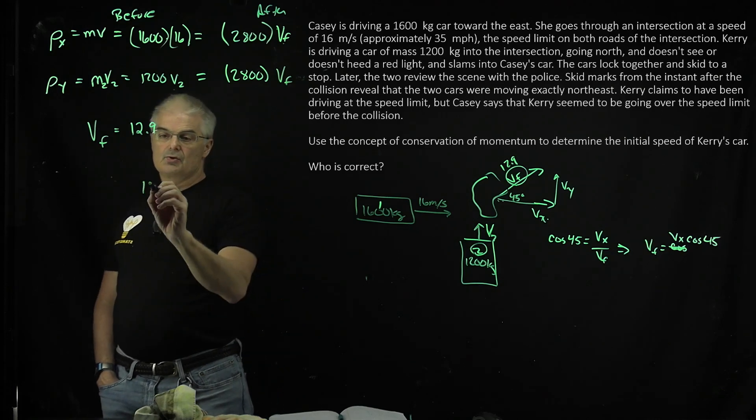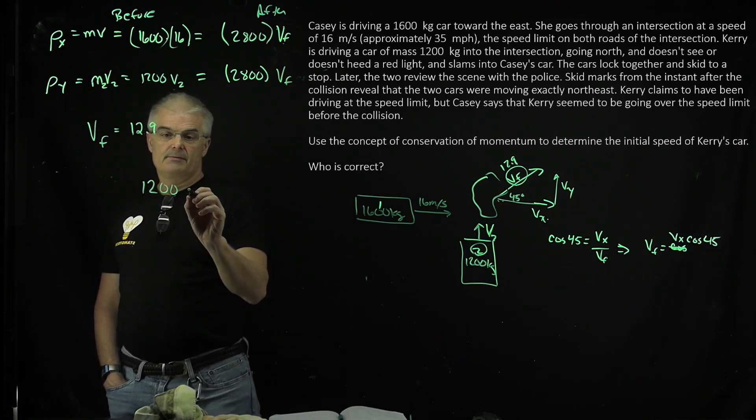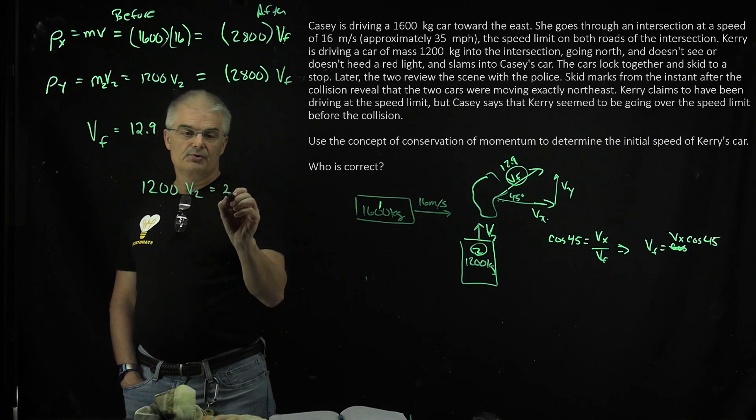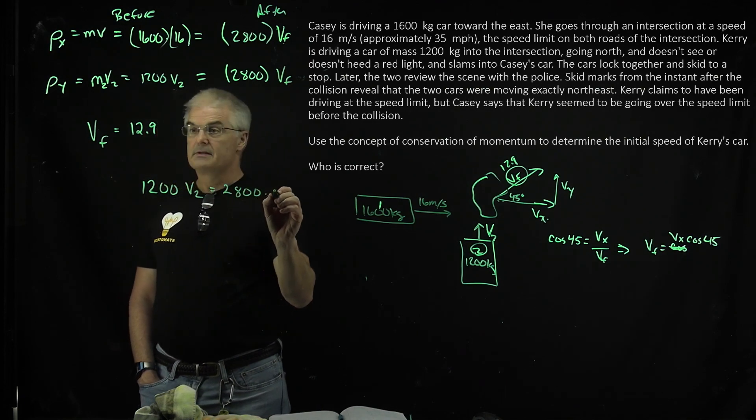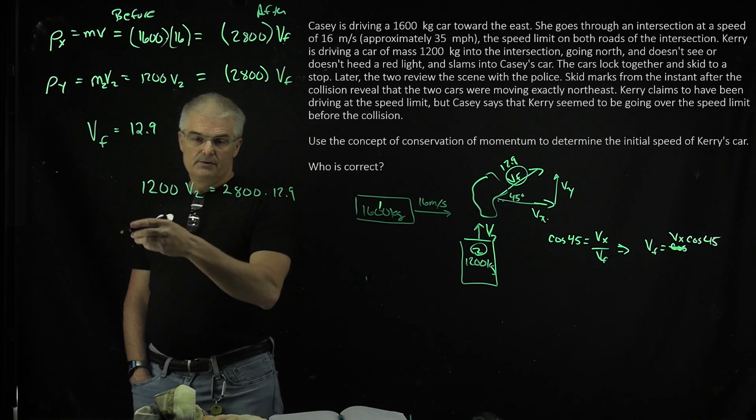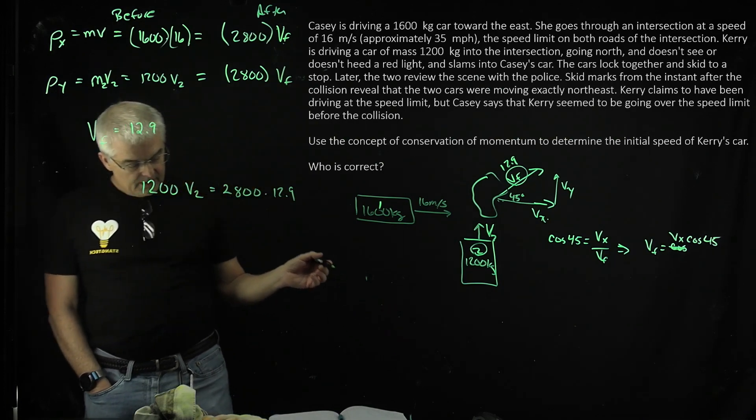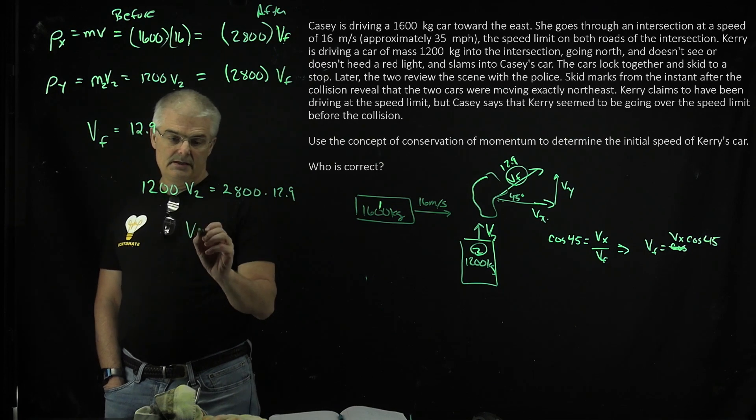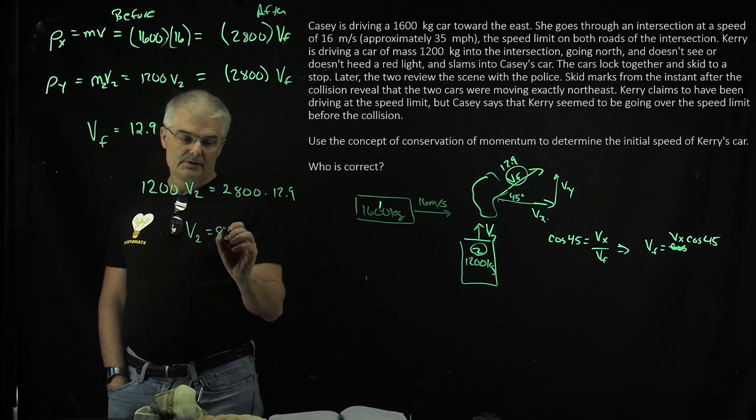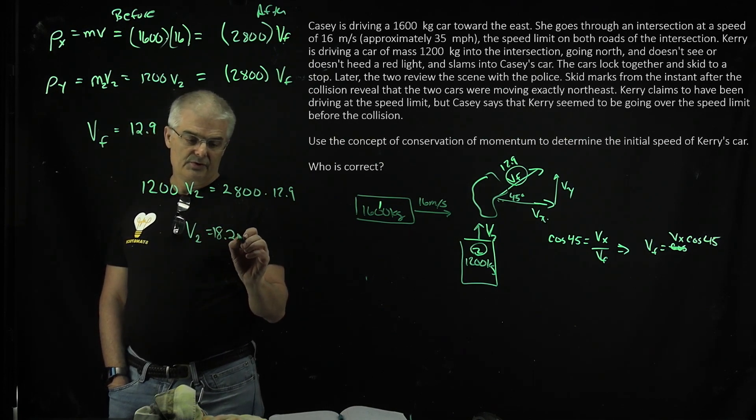So you would just say 1200 times V2 equals 2800 times 12.9. And then you do the math, this to this, whatever, divide, and I get 18.2 meters per second.